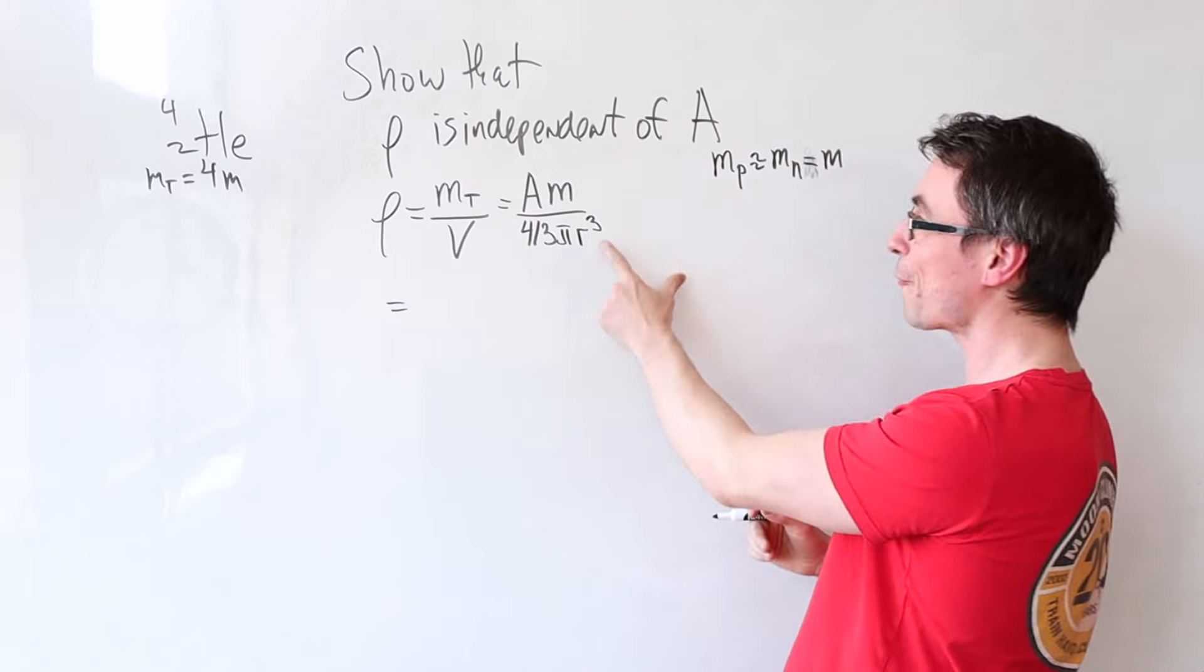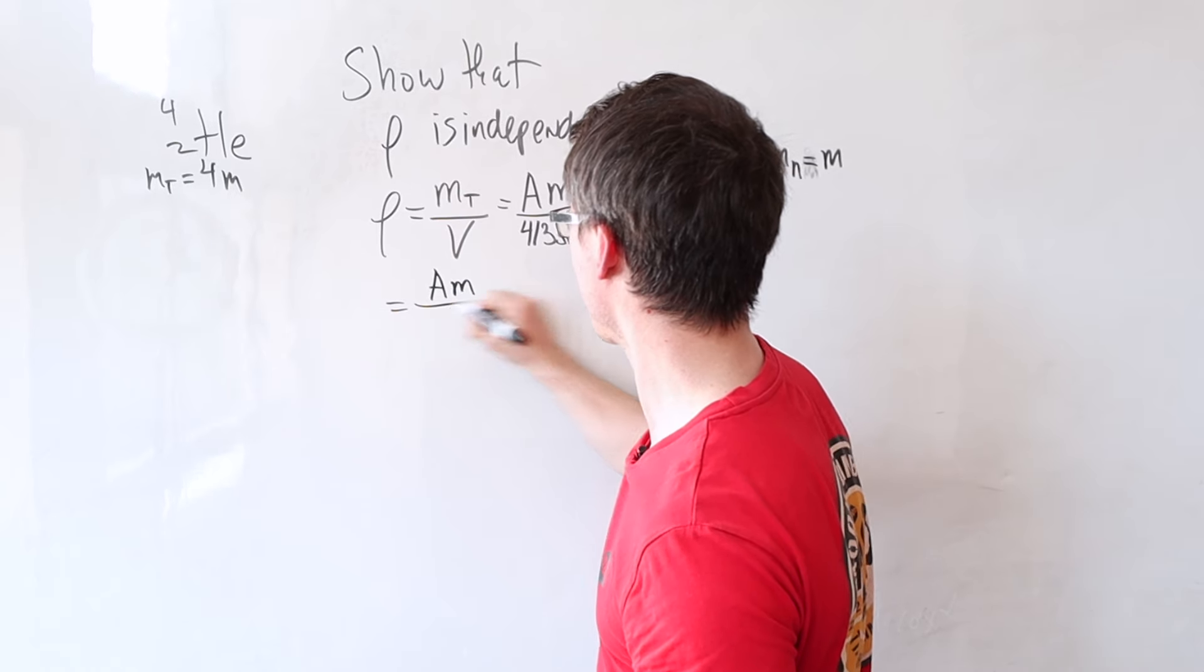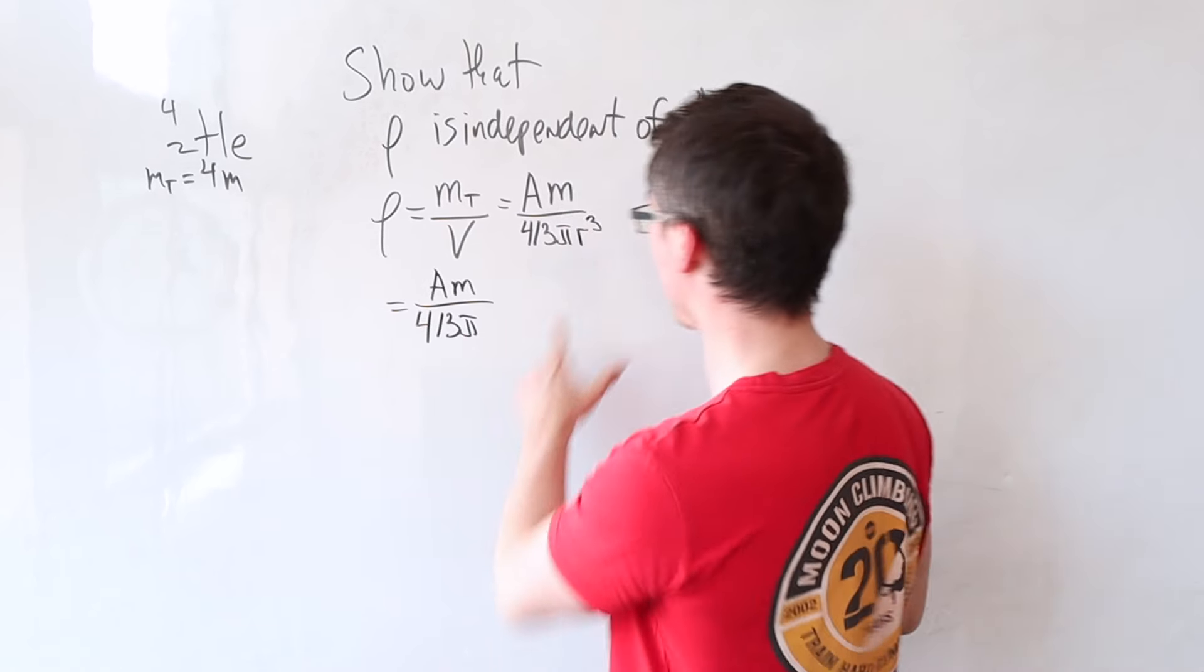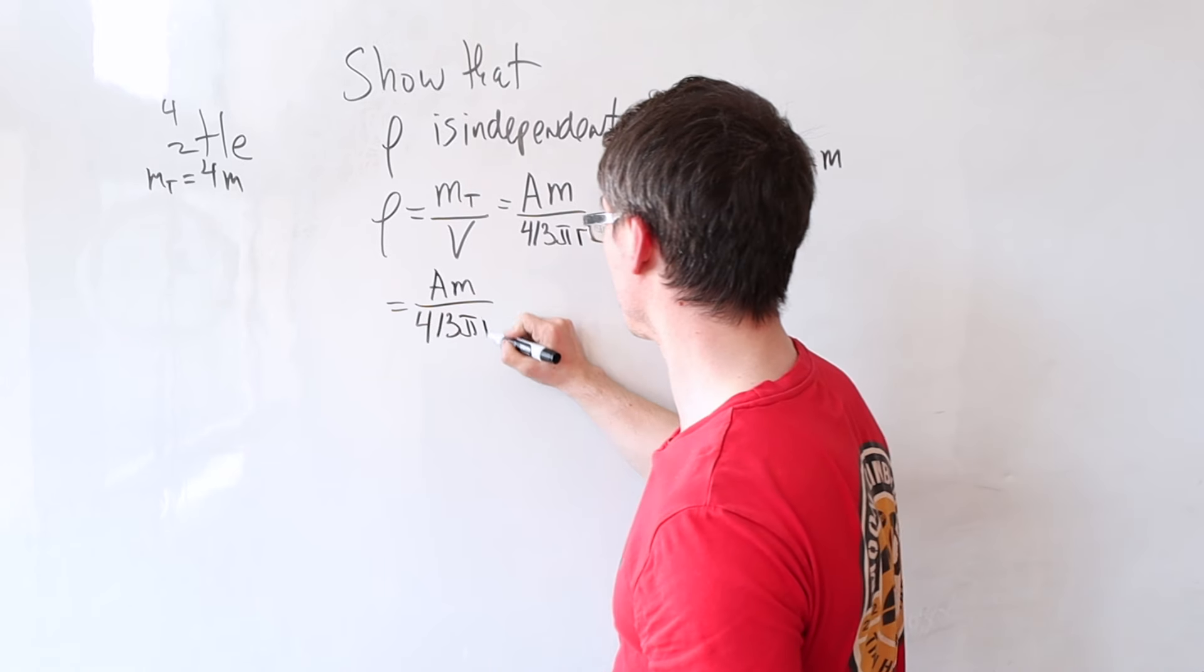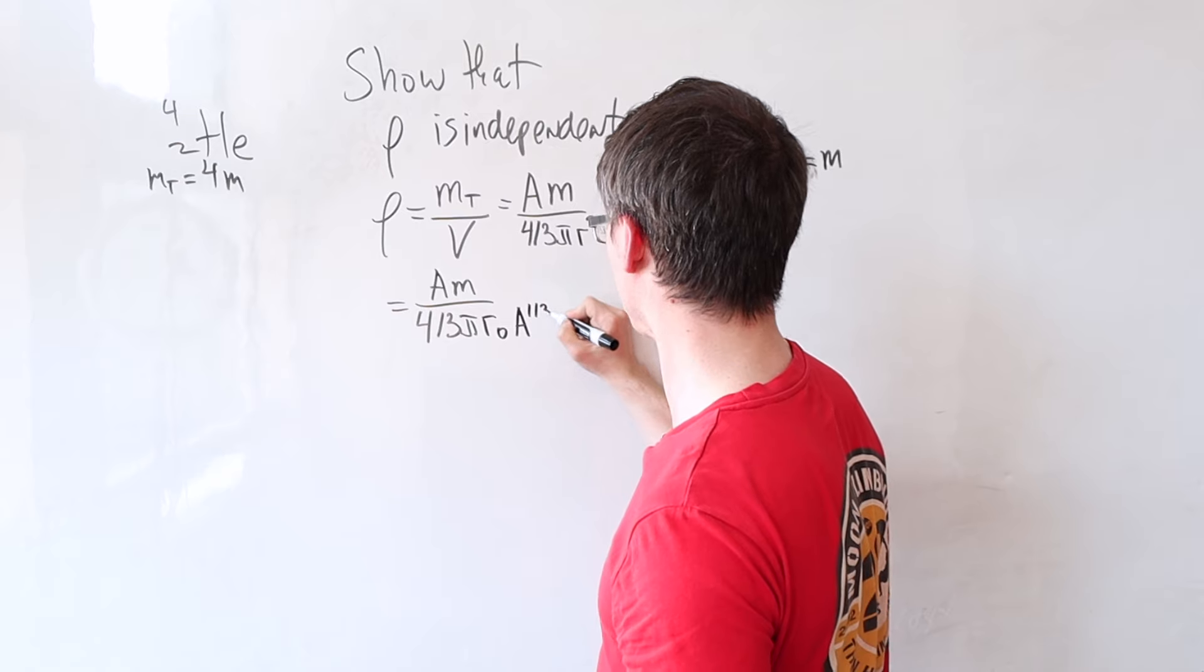But remember, we have a formula for the radius of a nucleus, so we're going to have Am and then 4/3 π. What was the formula for the radius of a nucleus? It's going to be r₀A^(1/3).